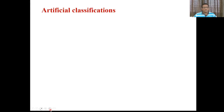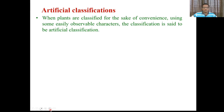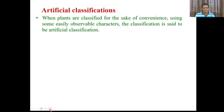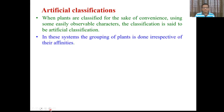Artificial classifications are the classifications which were given in the early stage when the studies of life sciences began. Aristotle, Theophrastus, and Linnaeus gave such types of classifications - when organisms were classified for the sake of convenience using some easily observable characters. The laboratories were not present at that time, they lacked microscopes, so some easily observable characters were considered as the base for classifications. Such classifications are called artificial.